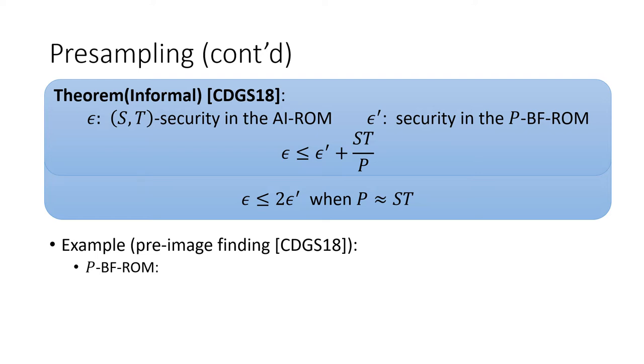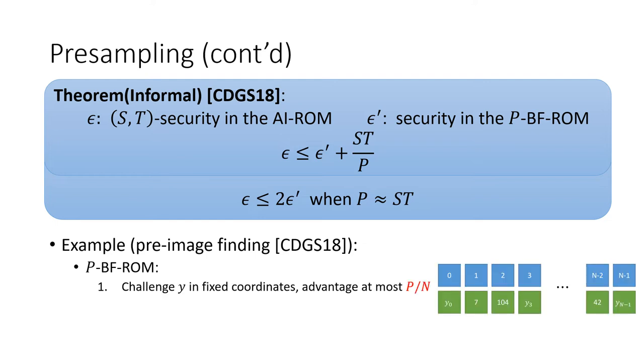If the challenge y, which is the image to be inverted, is in these fixed coordinates, then the problem is easy to solve. Because there are at most p fixed coordinates, this would only happen with probability at most p over n.